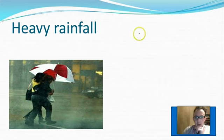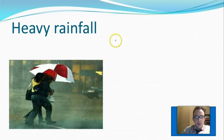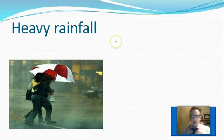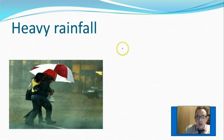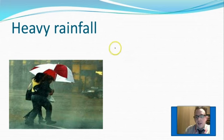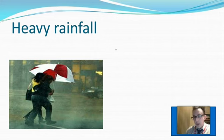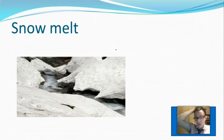Prolonged rainfall leads to saturated ground, which means no more water can infiltrate into the soil, which means more water runs over the surface into the river, causing the river to rise quicker and potentially flood faster. The next physical factor is heavy rainfall. Heavy rainfall is important because if it rains so hard, the water doesn't get an opportunity to infiltrate into the ground.